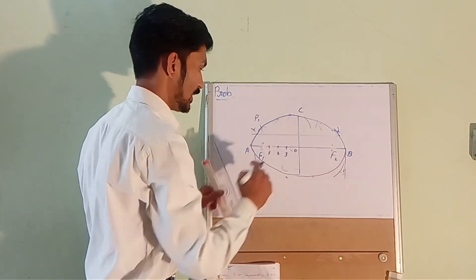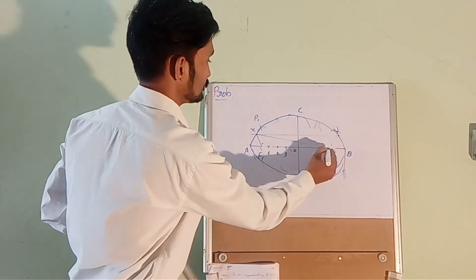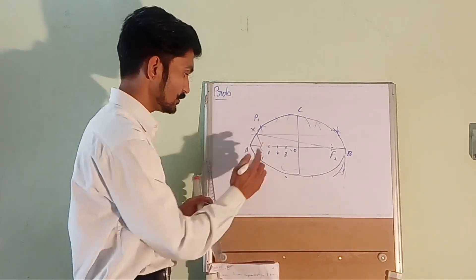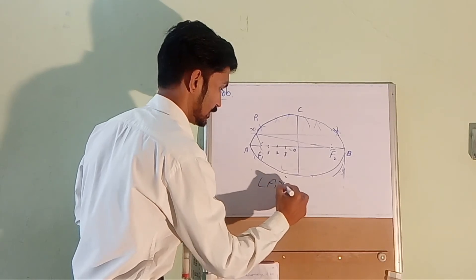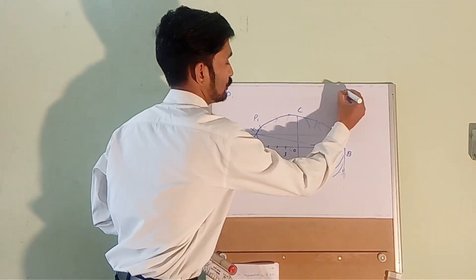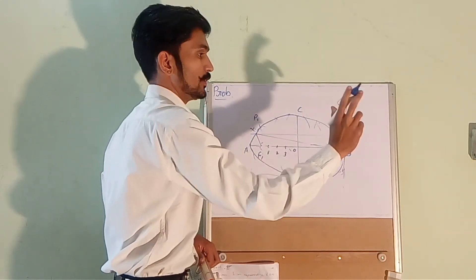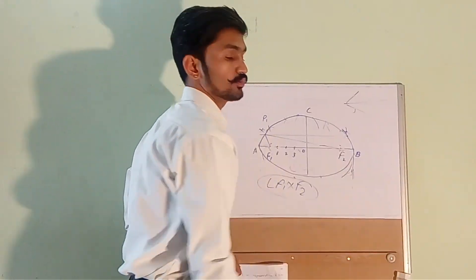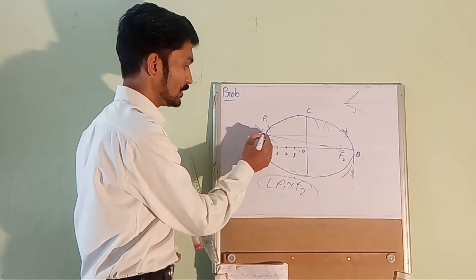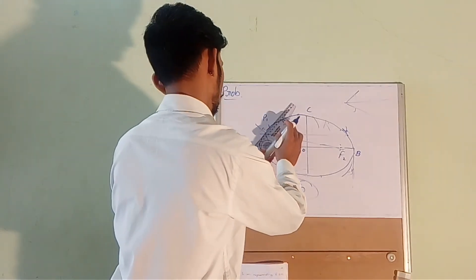From point X, join lines to F1 and F2. Then draw the angle bisector of the angle F1-X-F2. To draw an angle bisector, open your divider, cut two arcs from X along both arms, then open it larger and cut two more arcs to find the bisector line. This angle bisector is the normal NN at point X on the ellipse.